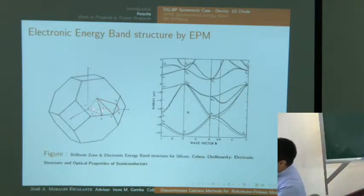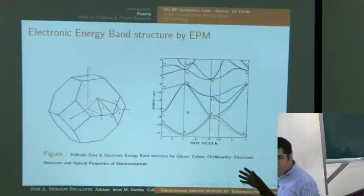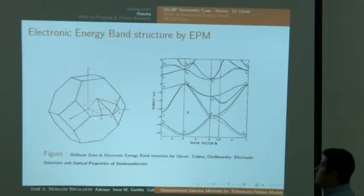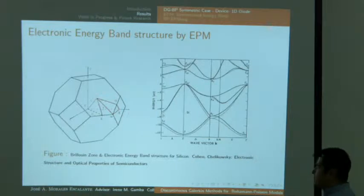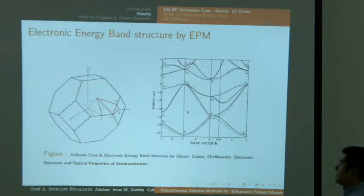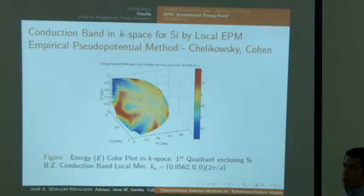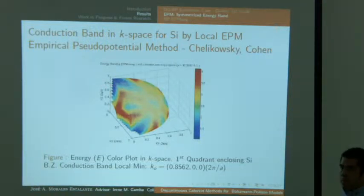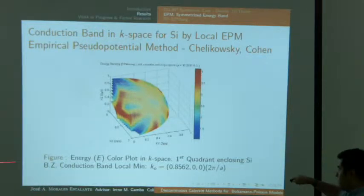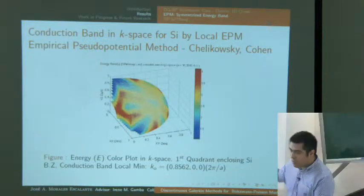In the Chelykowski EPM method, the lattice potential is assumed symmetric and isotropic. A truncated Fourier series is used, and the energy bands are obtained by solving the resulting determinant eigenvalue problem. In electrical engineering, energy bands are typically plotted along piecewise linear trajectories through the Brillouin Zone in three directions. Using Chelykowski's code, I constructed a full representation of the conduction band energy in the momentum domain, showing the local minimum near 0.85 and ellipsoidal contours that become non-ellipsoidal farther from the minimum.